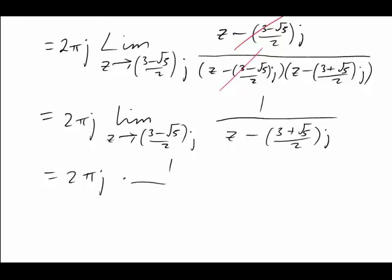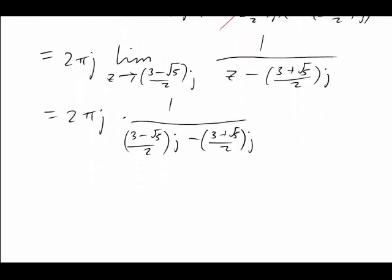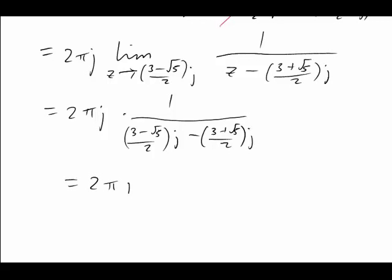So we get 1 over (3 - √5)/2 × j minus (3 + √5)/2 × j, which is 2πj.